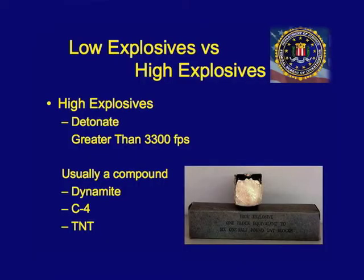High explosives detonate at a greater velocity — at least 3,300 feet per second up to approaching 28,000 feet per second for things like detonating cord or RDX. They're usually a chemical compound. That's your dynamite, C4, trinitrotoluene — TNT. You have to treat them all with respect.